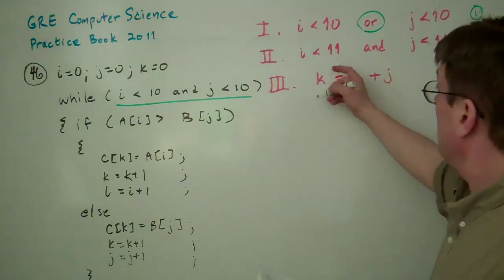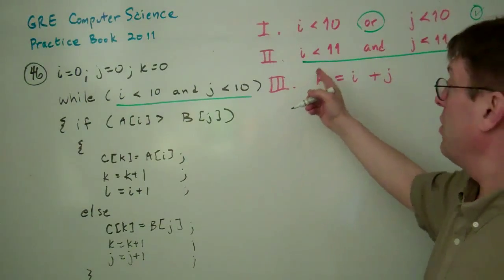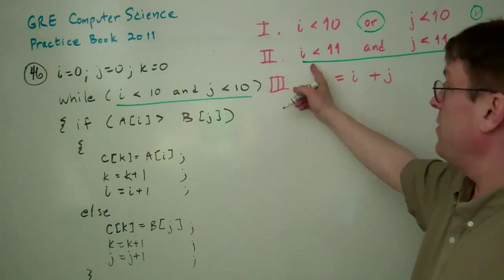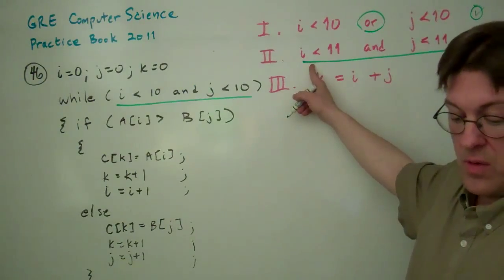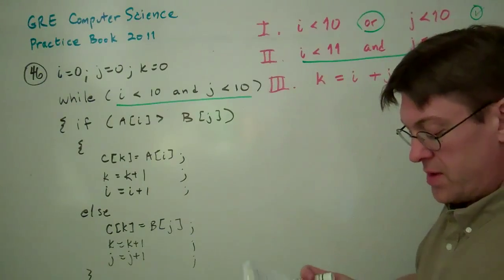The second one says I is less than 11 or J is less than 11. Well, if they're both less than 10, they're definitely both going to be less than 11. So that one's also true. Those are somewhat clear, intuitively obvious there.